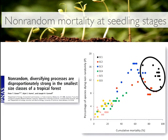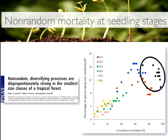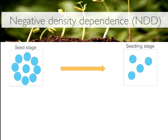In addition to this high mortality, a study shows that the mortality happening here is the result of non-random processes. They analyzed long-term data from a natural community in Australia, evaluating mortality patterns across different size classes. What they found is that the percentage of species dying non-randomly varies across size classes. Seedlings, represented by the black color, are the ones with the highest percentage of species dying non-randomly. So, what are the mechanisms leading this high non-random mortality at these early ontogenetic stages?